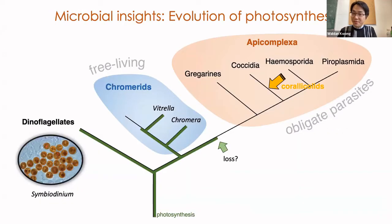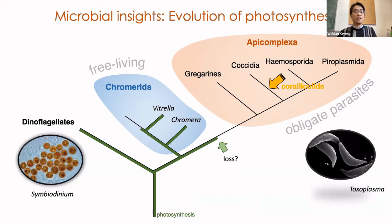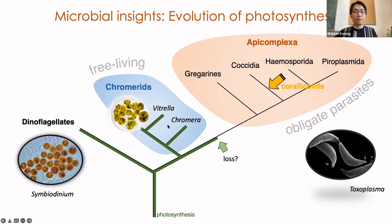We then dug deeper, as we knew that Apicomplexans have a very interesting evolutionary history. You may be familiar with Apicomplexans because they are commonly considered obligate parasites, including the causative agents of malaria and toxoplasmosis. But they actually evolved from phototrophic ancestors. Their closest relatives are called chromerids, and they still retain a photosynthetic plastid. But somewhere along the way, this ability to photosynthesize was lost. How this transition between free-living and parasitic lifestyles happened is a major question in the field.